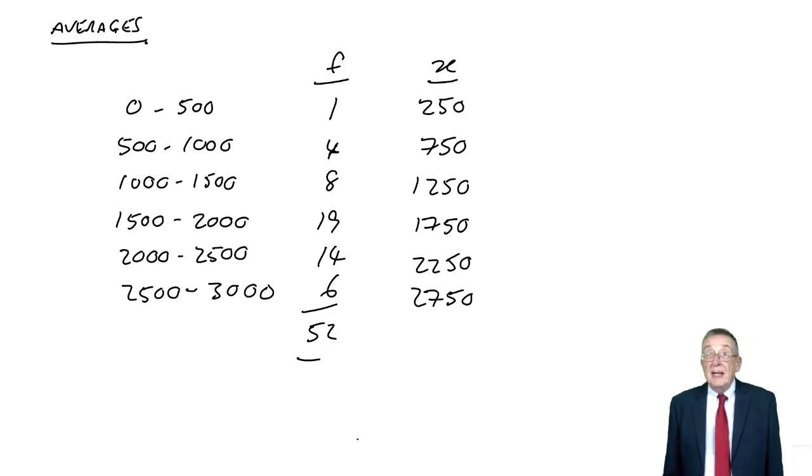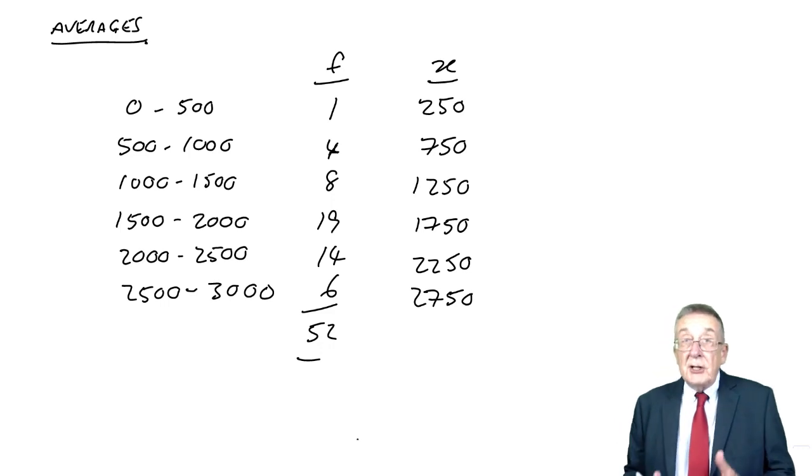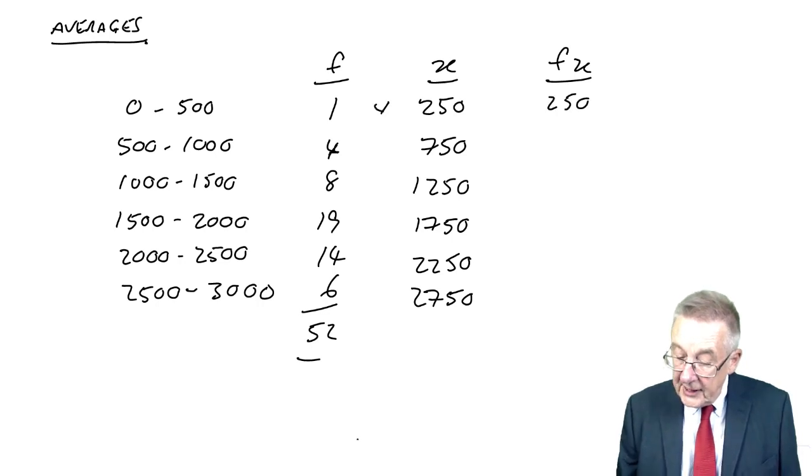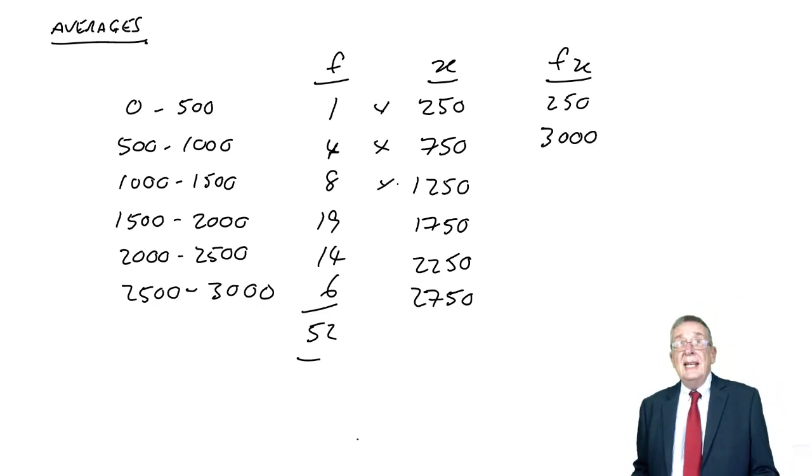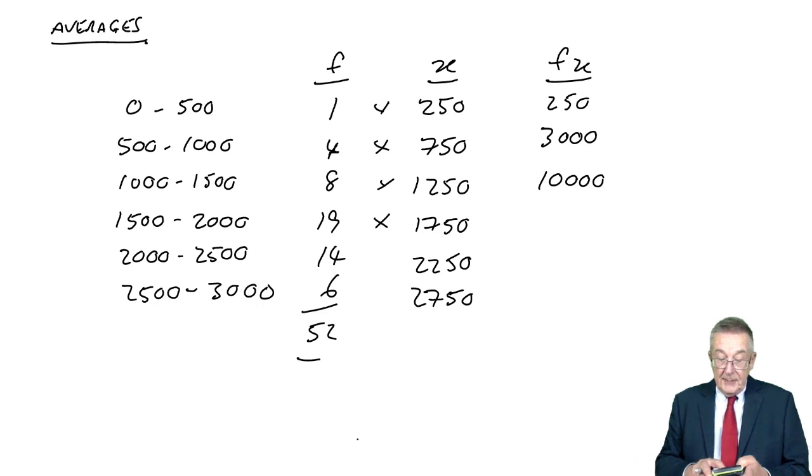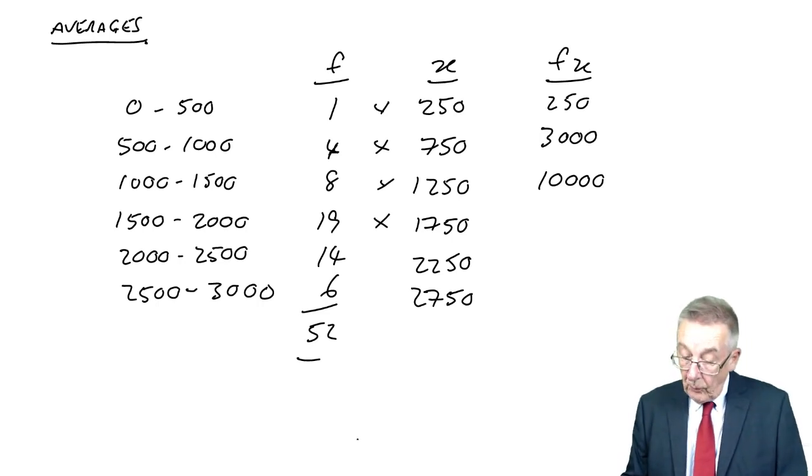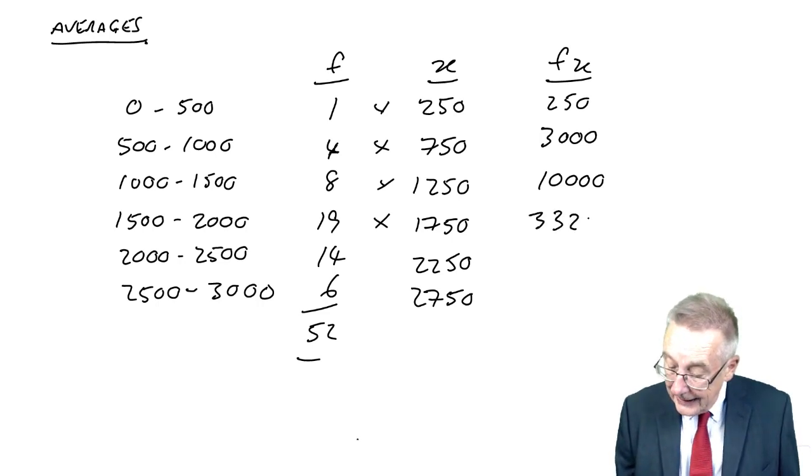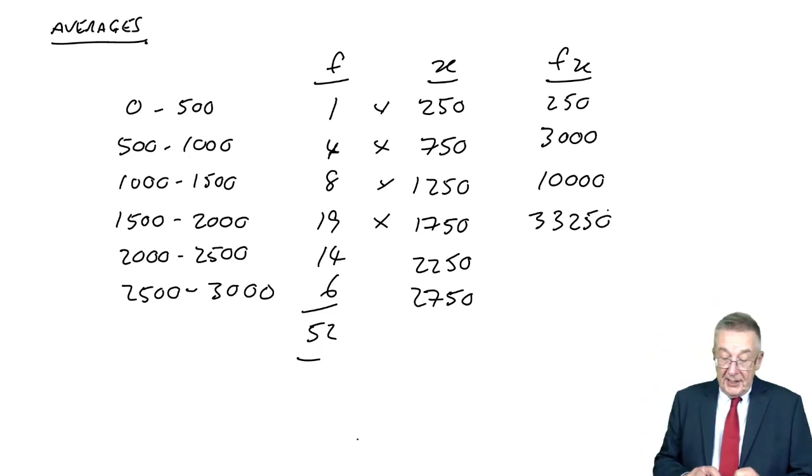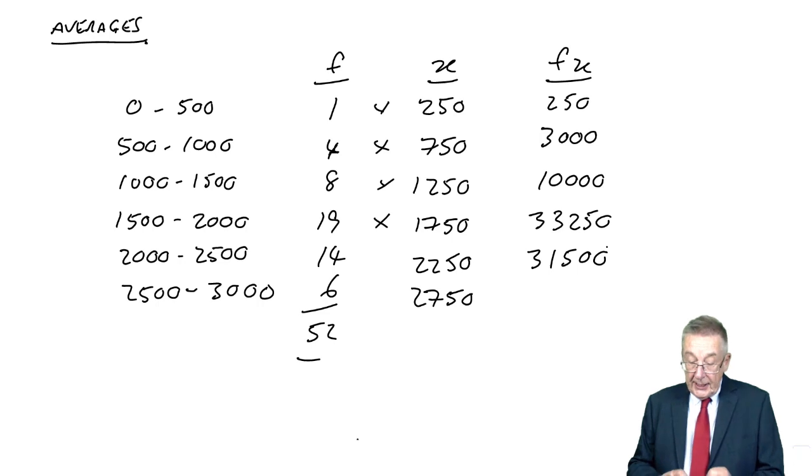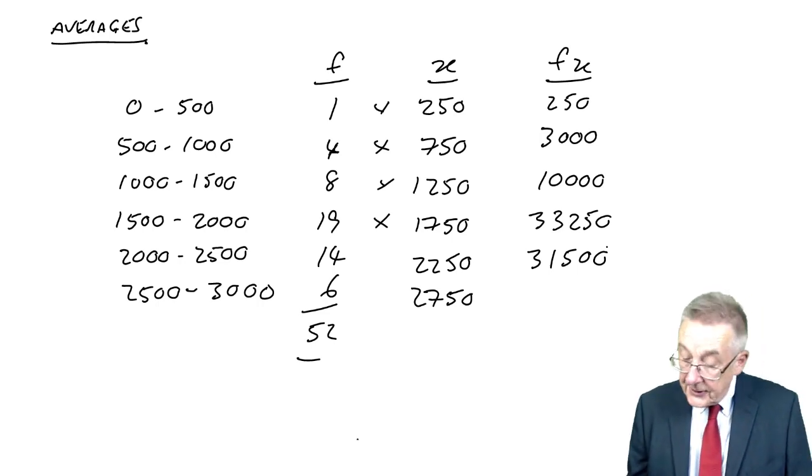For the arithmetic mean, we do exactly the same as before. Now we need the total of all these observations, so we take F times X. 1 times 250 is 250. 4 times 750 is 3000. 8 times 1250 is 10000. 19 times 1750 is 33,250. 14 times 2250 is 31,500. And finally, 6 times 2750 is 16,500.